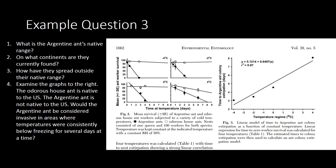This next example question relates to data on an invasive species and requires some critical thinking. The Argentine ant isn't actually on this year's list, but I like this question for the format — students could expect a similar question for a different species. The native range of the Argentine ant is South America; they're now found everywhere except Antarctica. They spread through shipping, likely on coffee or sugar. Those types of questions would be typical for species on this year's list. The final question: examine the graph to the right. The odorous house ant is native to the U.S.; the Argentine ant is not. Would the Argentine ant be considered invasive in areas where temperatures were consistently below freezing for several days at a time?